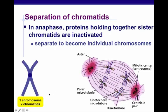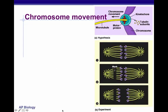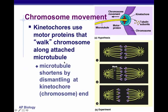Starting with two sister chromatids — one chromosome, two chromatids, double-stranded — we end up separating them into two single-stranded chromosomes. A key experiment on chromosome movement: people didn't know whether chromosomes were shortening at the chromosome end or at the centrioles. The kinetochores use motor proteins that walk chromosomes along attached microtubules, and the microtubule shortens by dismantling at the kinetochore — meaning at the chromosome end. When researchers cut the spindle fibers and marked them, the fibers continued to shorten even when disconnected from the centrioles, confirming that shortening happens at the chromosome end.